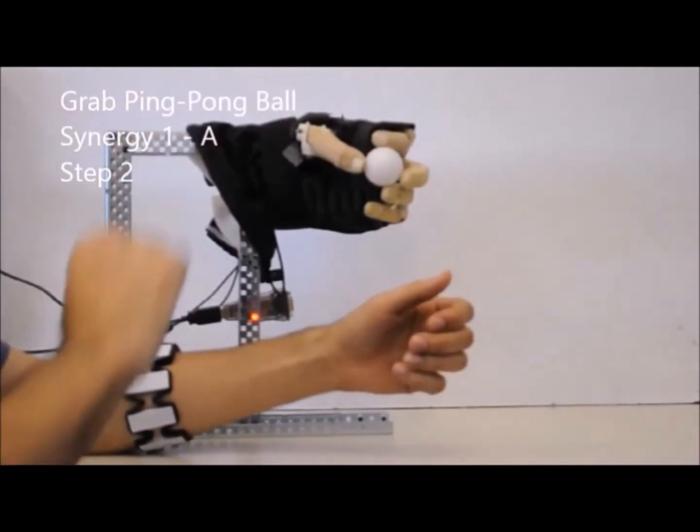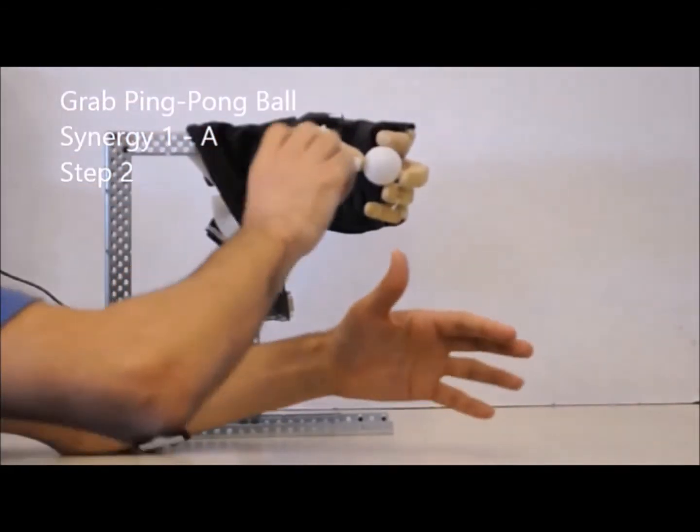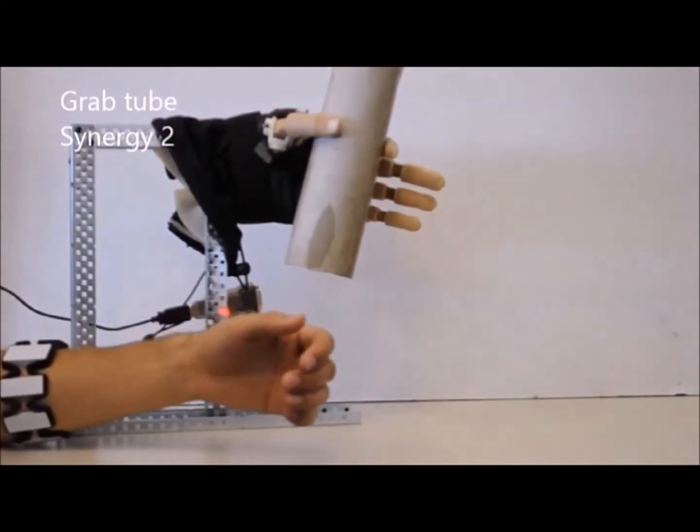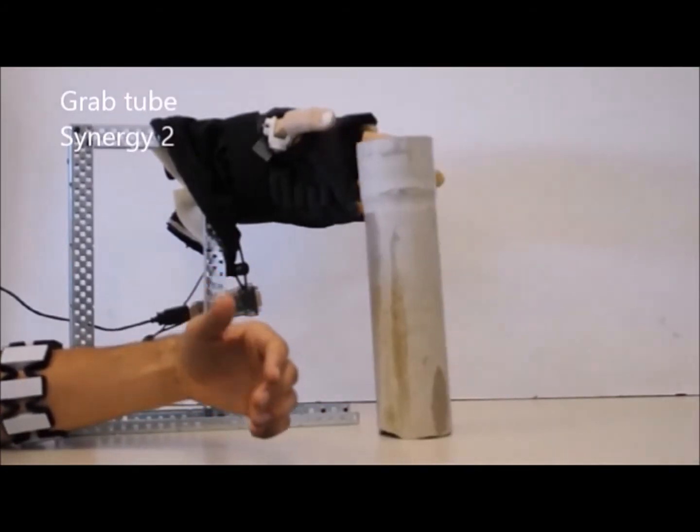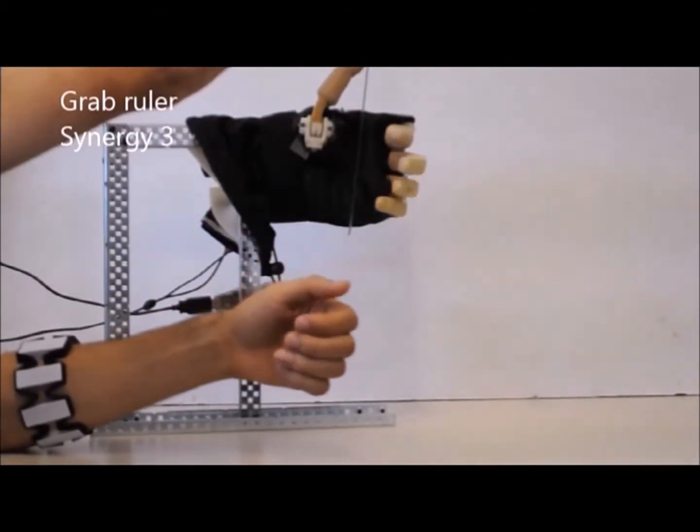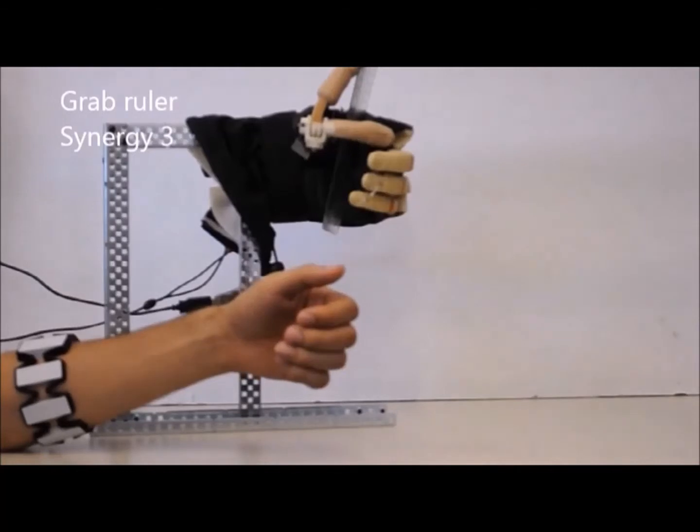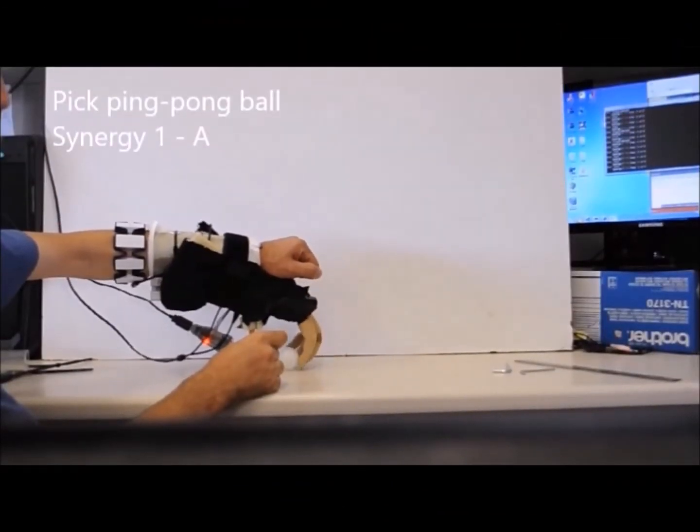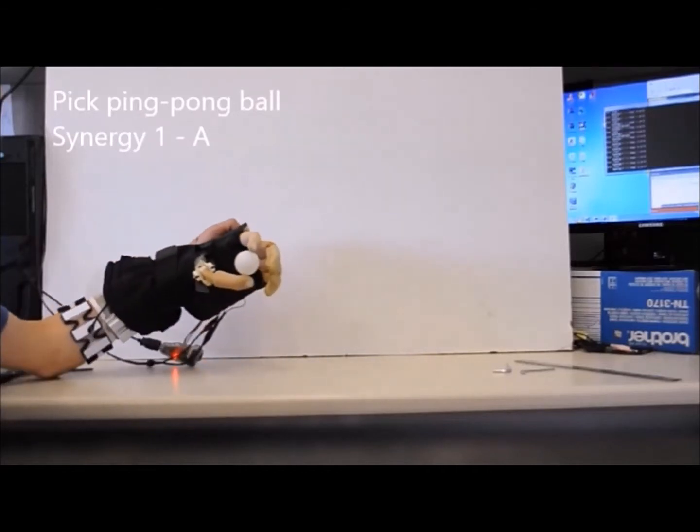In order to control the ISR Softhand with these five synergies, we utilize the gesture detection of the Myo armband: the fist gesture for closing, the finger spread gesture for opening the hand, and the wave right or wave left gestures for changing between the synergies. With this method, the user can effectively achieve all the synergies and grasp.